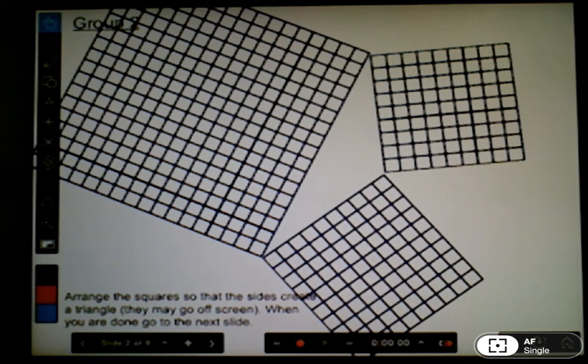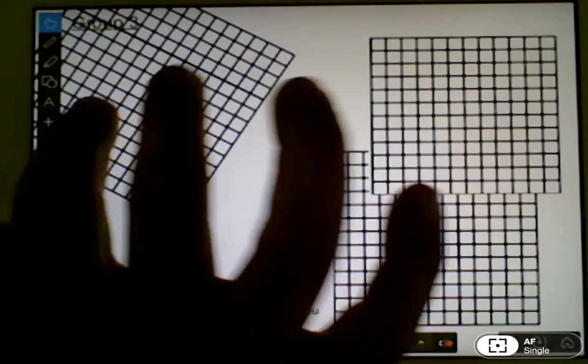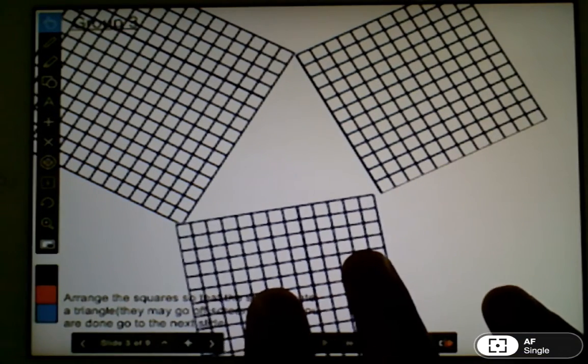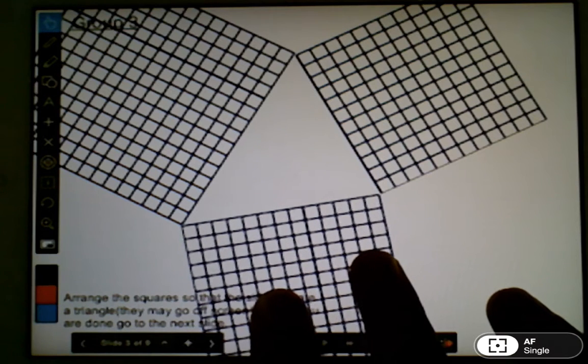They're actually made in two sets. The first set has three sets of squares in it, and the second set has three sets of squares in it.